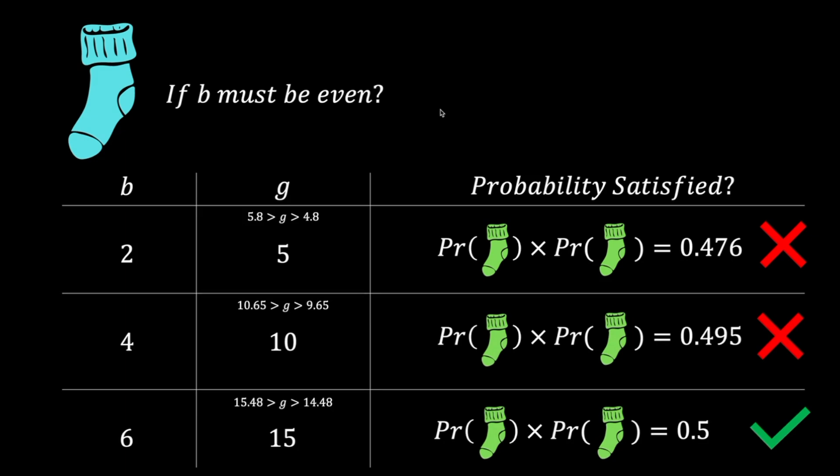Hence, the smallest possible value of n is 6 plus 15, 21. If this was too easy, check out this question from Janestree.